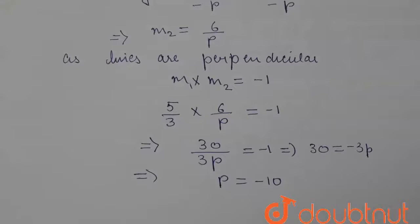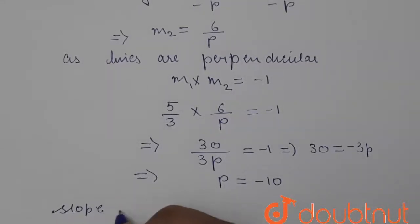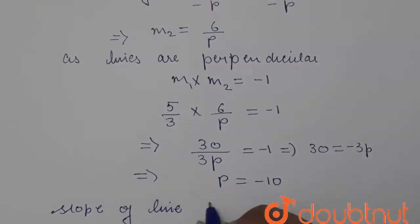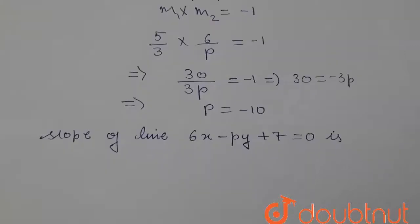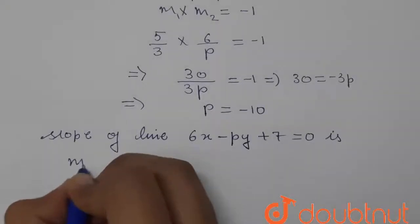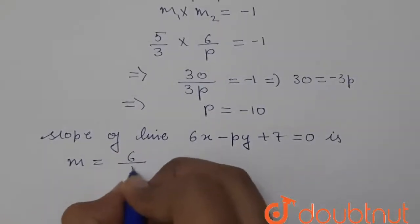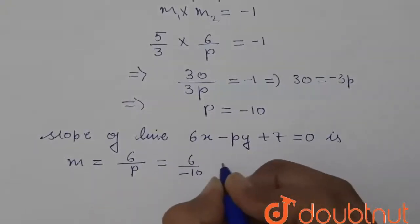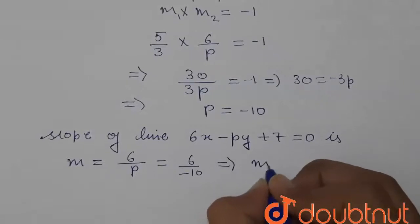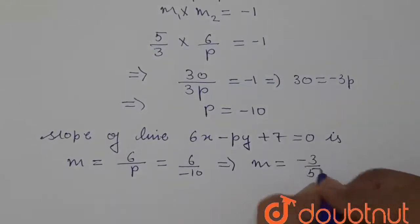Now, the slope of the line 6x - py + 7 = 0 is m = 6/p = 6/(-10), which implies m = -3/5.